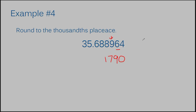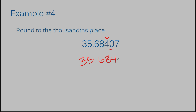Let's move on to example number four: round to the thousandths place. Let's figure out where our thousandths place is. Six is in our tens place, then this is our hundredths place, here's our thousandths place — we have four. We look to the number to our right to determine what we're going to do. It is in the category of being four or less, so that means this number stays the same. We can just rewrite everything else. So we're going to write 35 and 684. The answer to example number four is 35 and 684 thousandths.